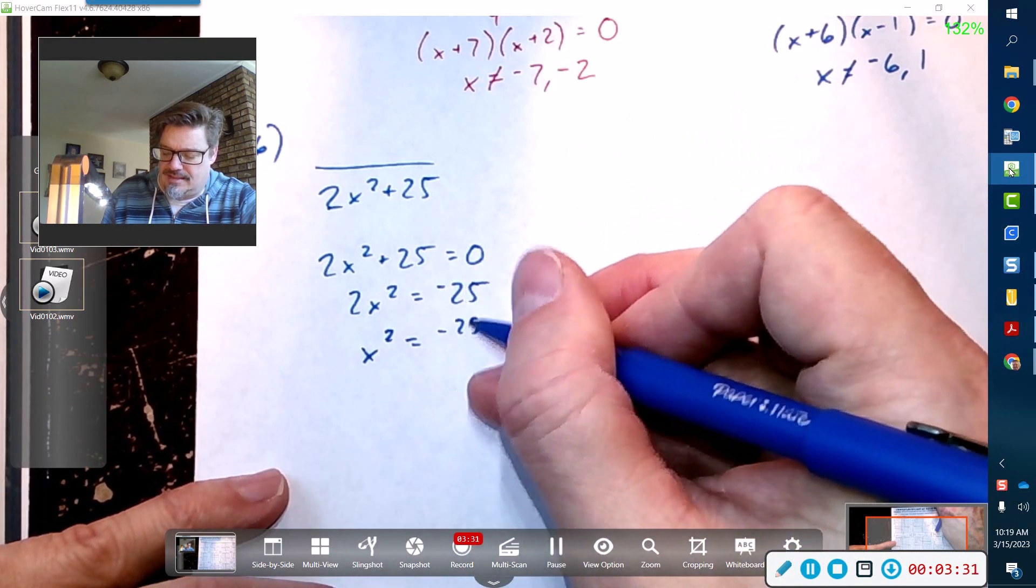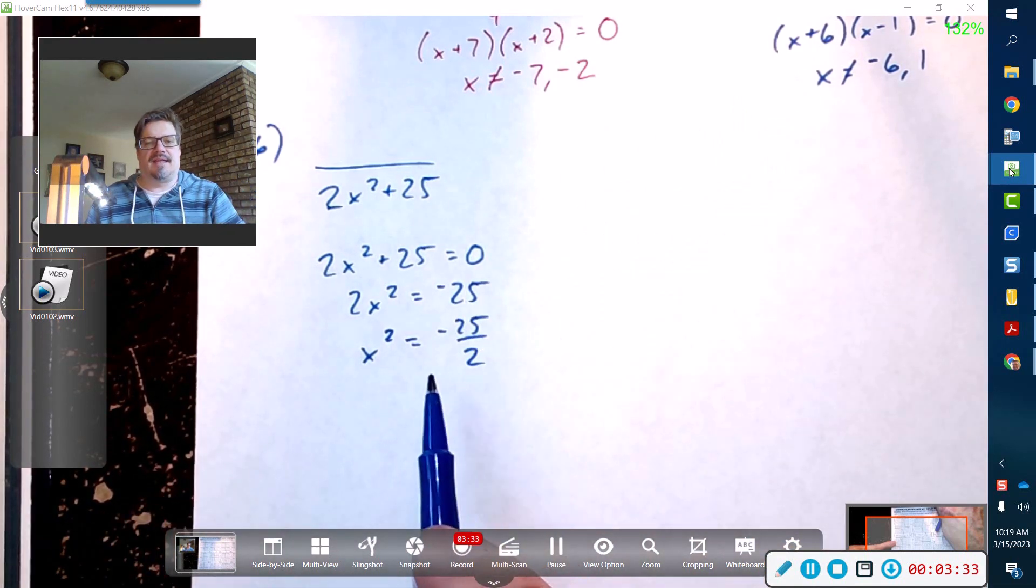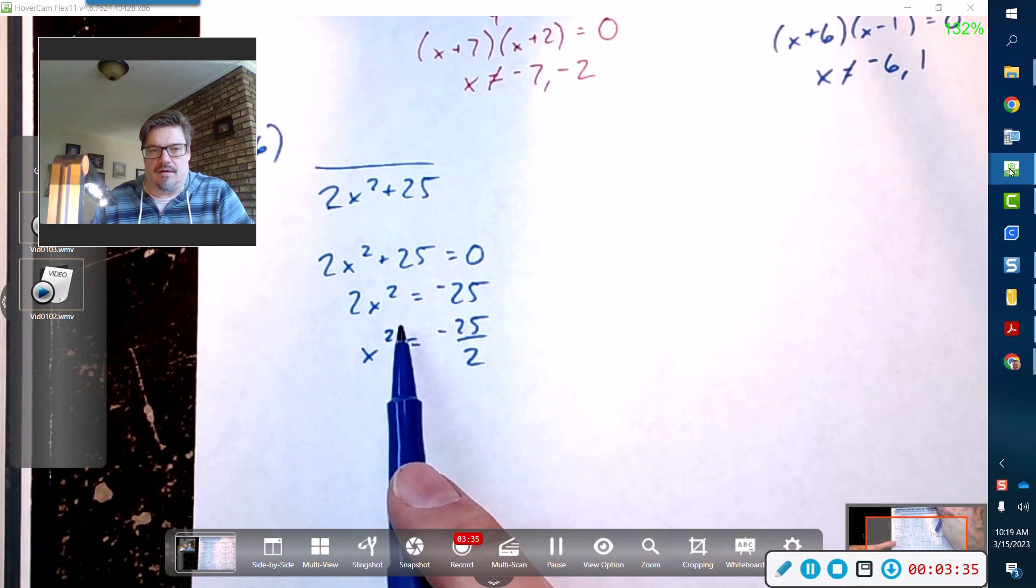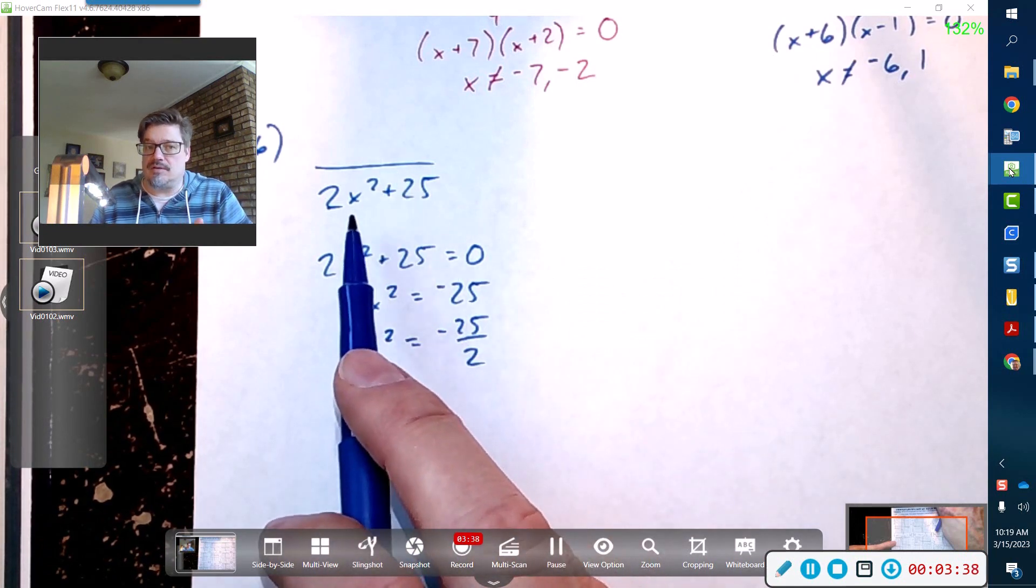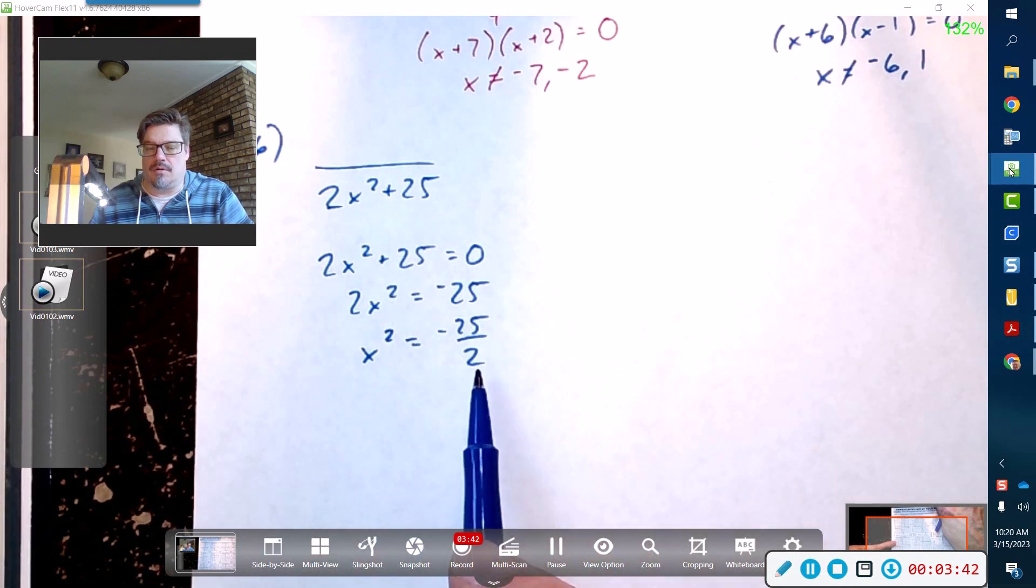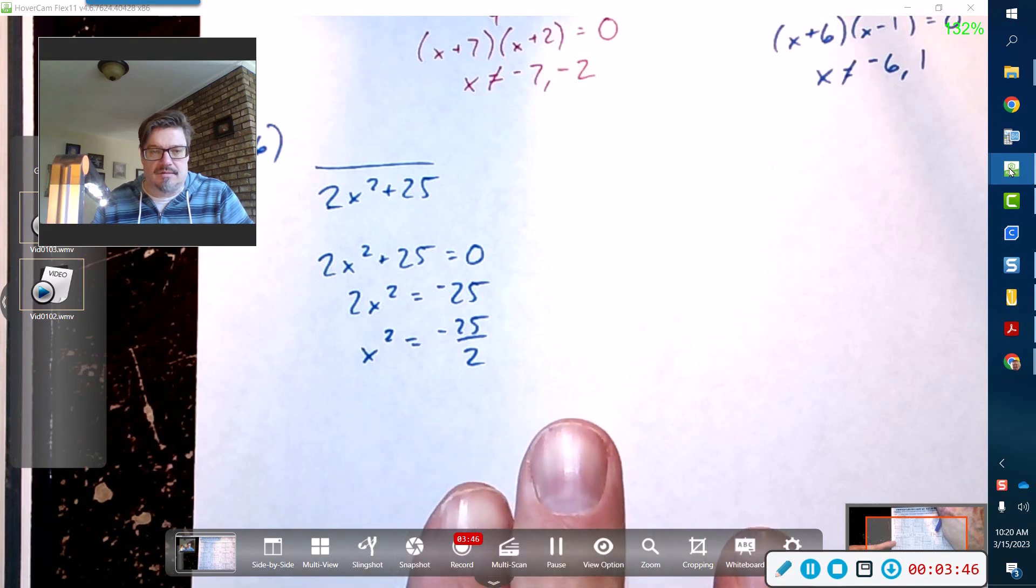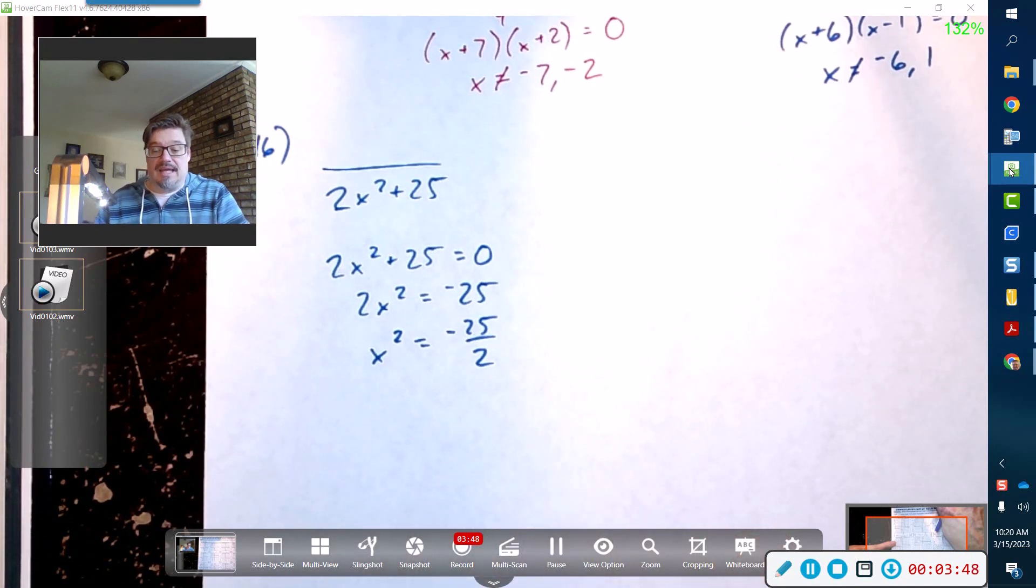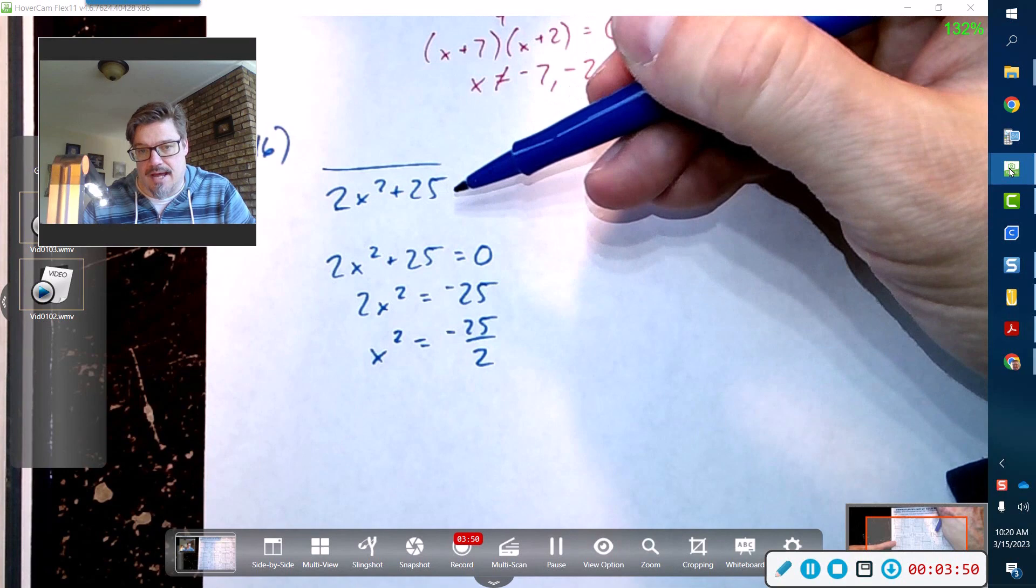Which means that there is no solution to this. So if there's no solution to this guy, what are the excluded values? There are none.